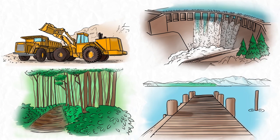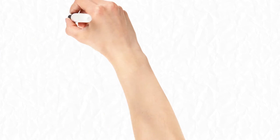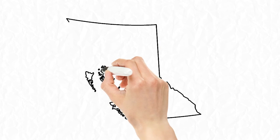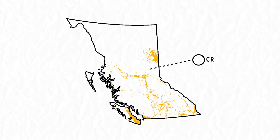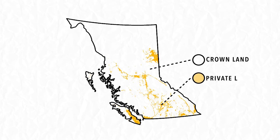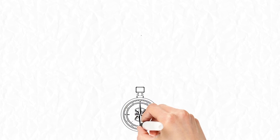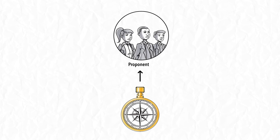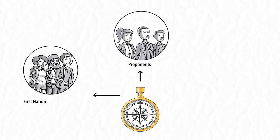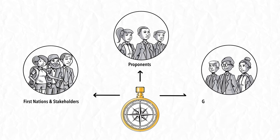The Environmental Mitigation Policy will usually be applied to projects proposed on Crown land, but the principles and process can also be applied to developments on private land. In addition to providing guidance to proponents, the policy and procedures can also guide stakeholders and government decision-makers who review development projects.